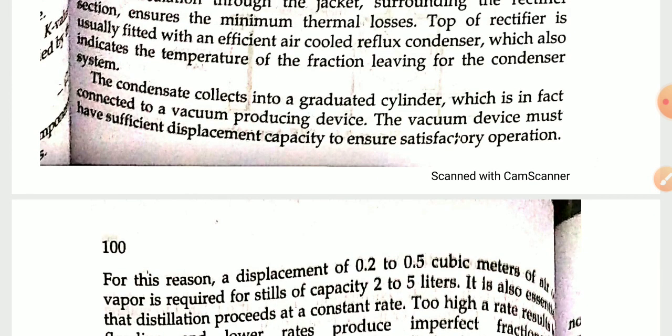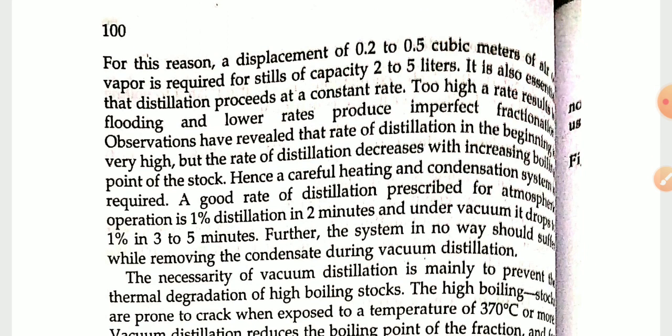The temperature of fractions leaving the condenser system is monitored. The condensate collects into a graduated cylinder connected to vacuum-producing devices. The vacuum device must have sufficient displacement capacity to ensure satisfactory operations. For this reason, a displacement of 0.2 to 0.35 cubic meters of air vapor is required for a still capacity of 2 to 5 liters. It is also ensured that the distillation proceeds at a constant rate — too high a rate results in flooding and a lower rate produces imperfect fractionation. The rate of distillation decreases with increasing boiling point of the stocks, hence careful heating and condensation are required.